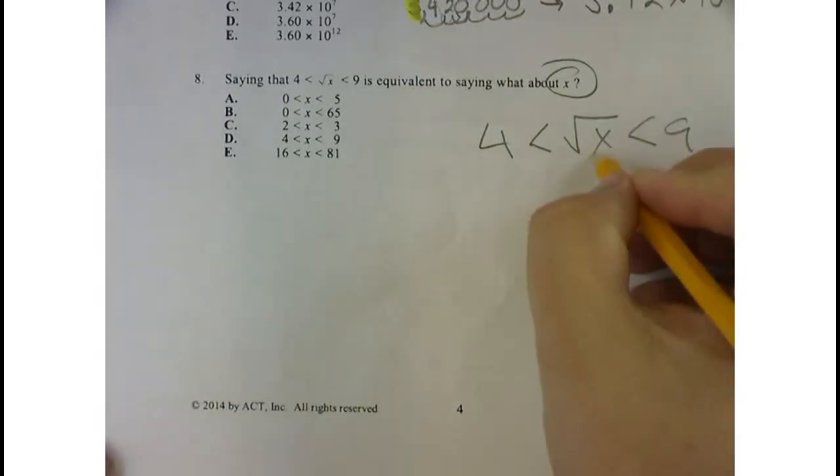Well, how can I make this equal x? Well, I have to undo the square root. So I have to do the inverse operation of a square root, which is to square something.